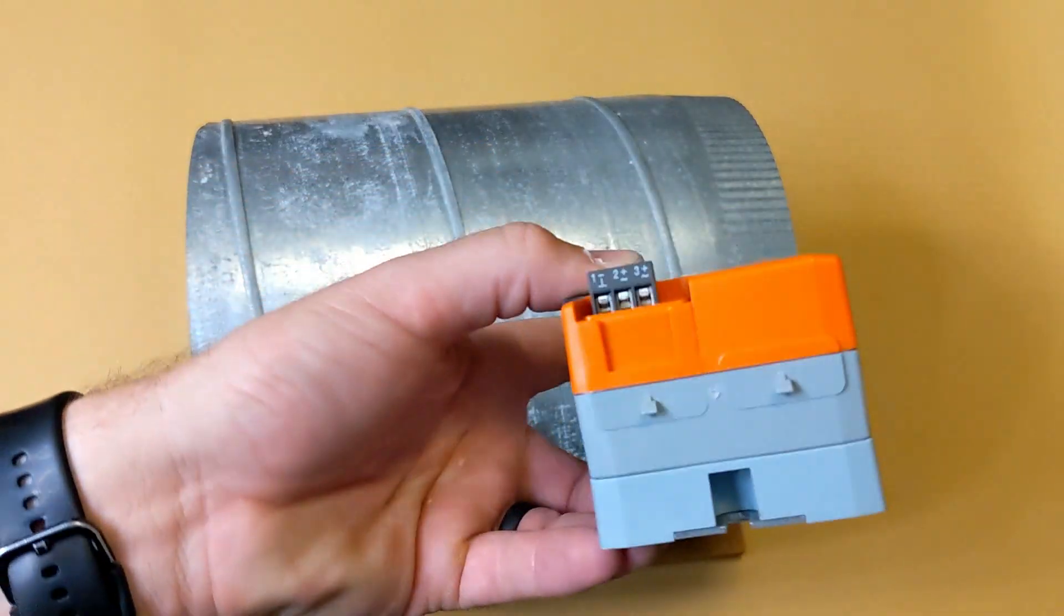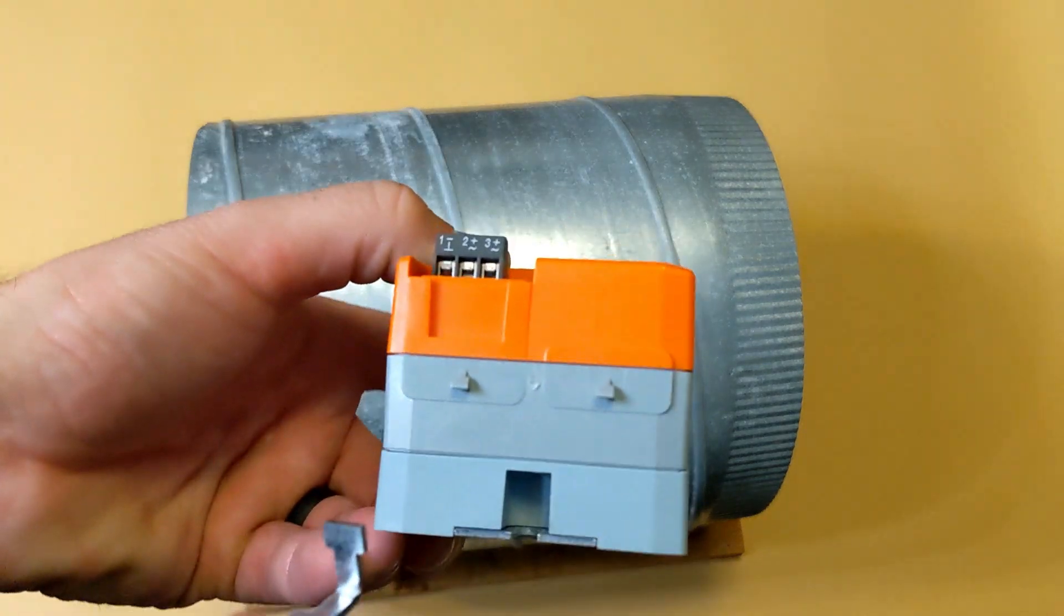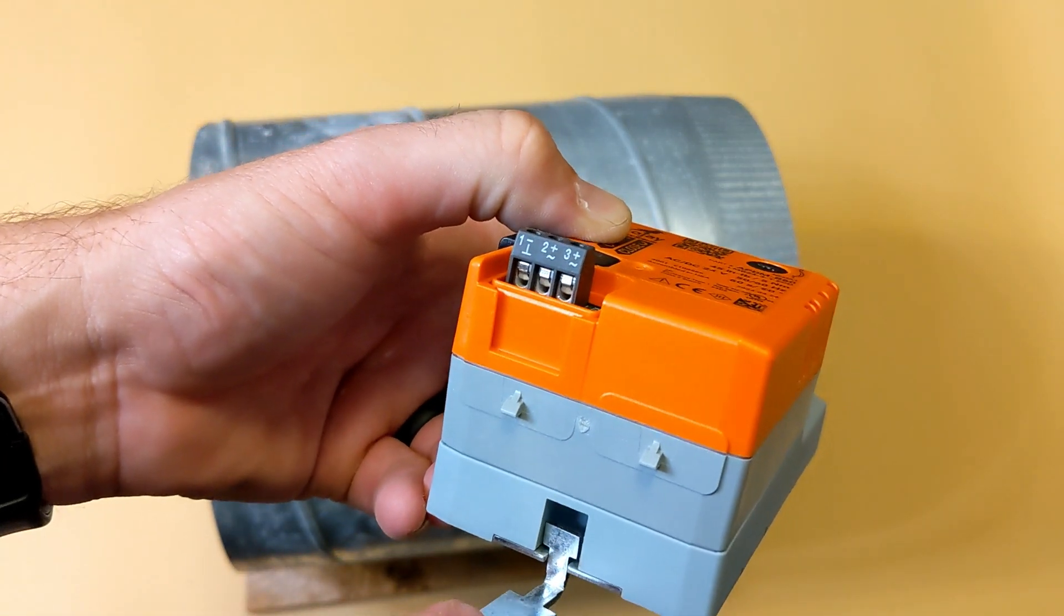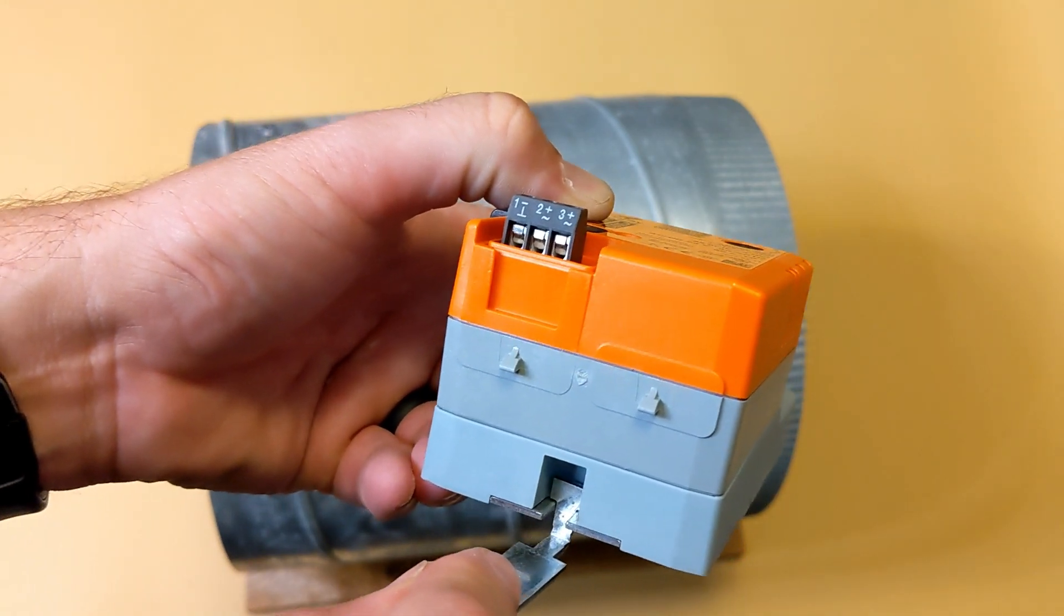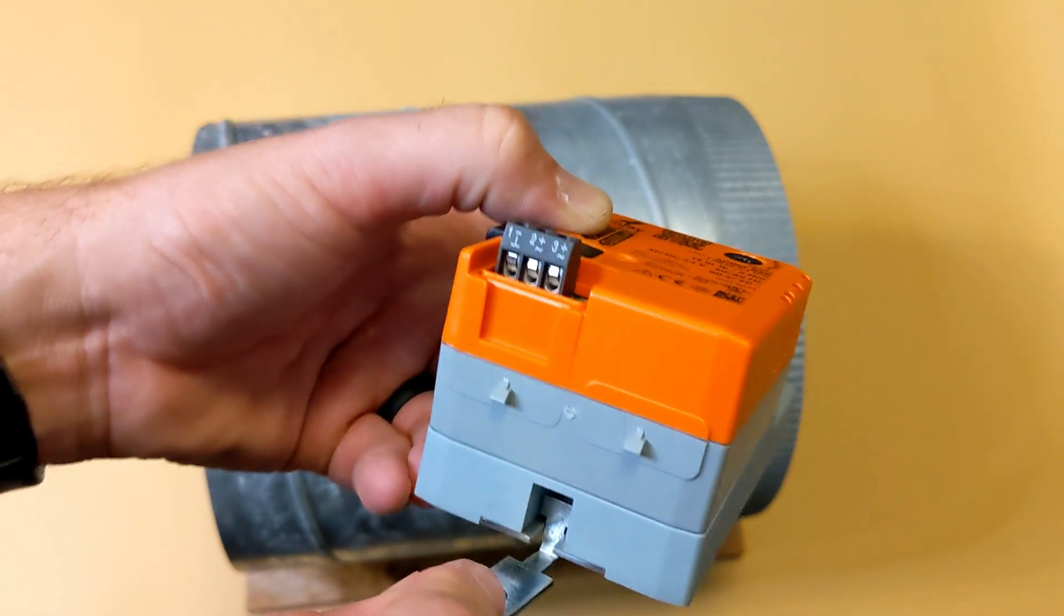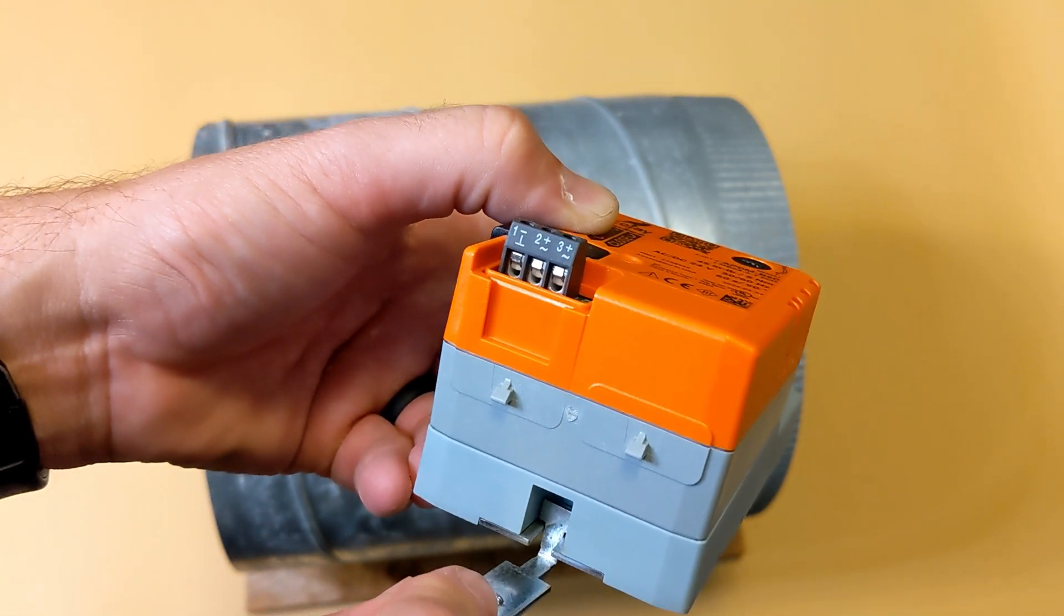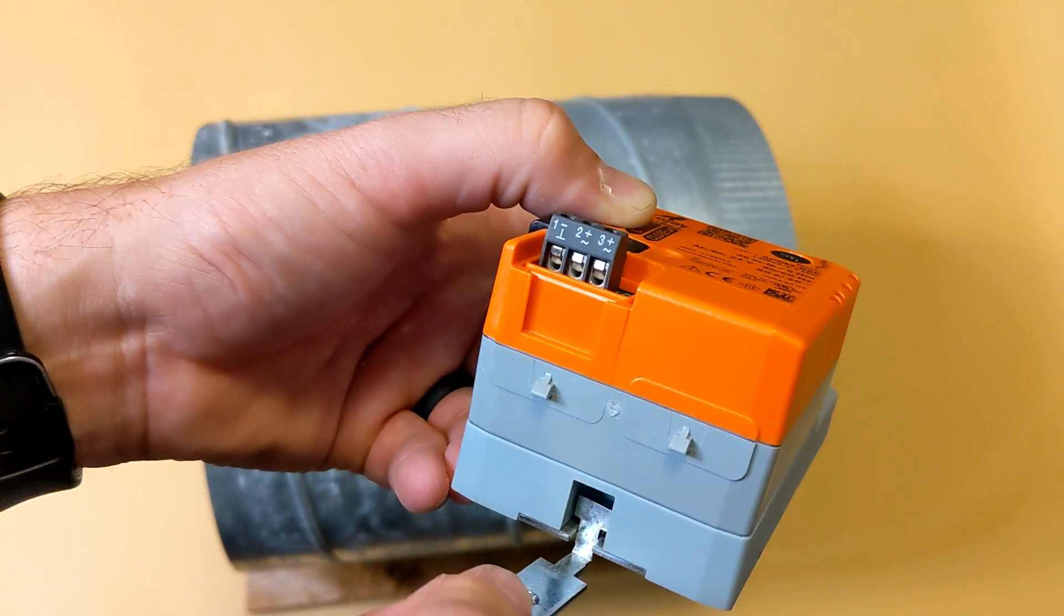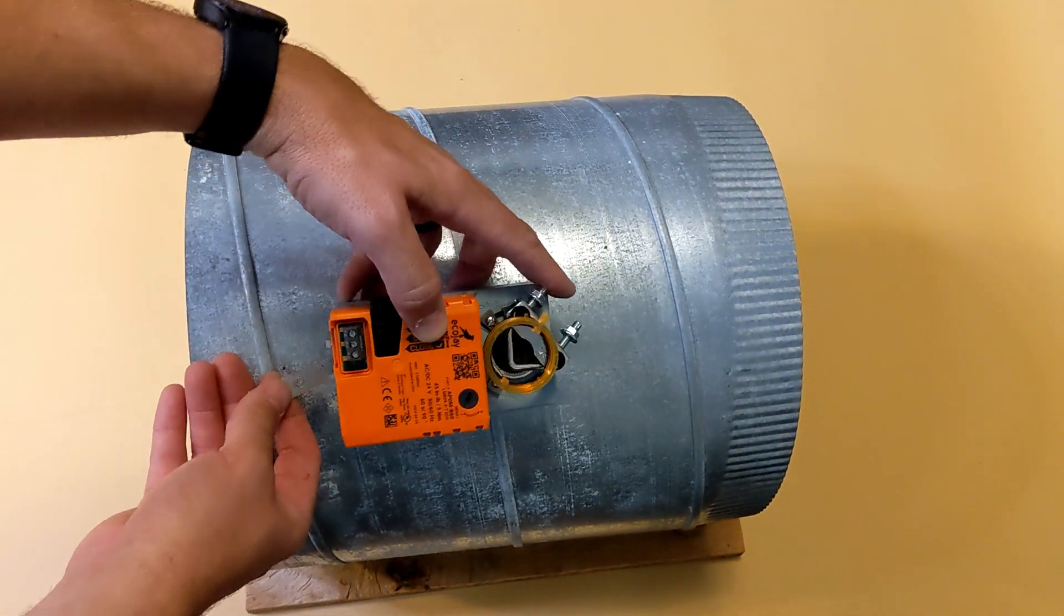Now we're going to install this anti-rotation bracket that comes with the motor. It's intended to slip in the back slot and keep the motor from rotating whenever the blade is turning. You don't want this bracket to be tight against the motor. Instead, you want it to be slightly loose to prevent the motor from binding.